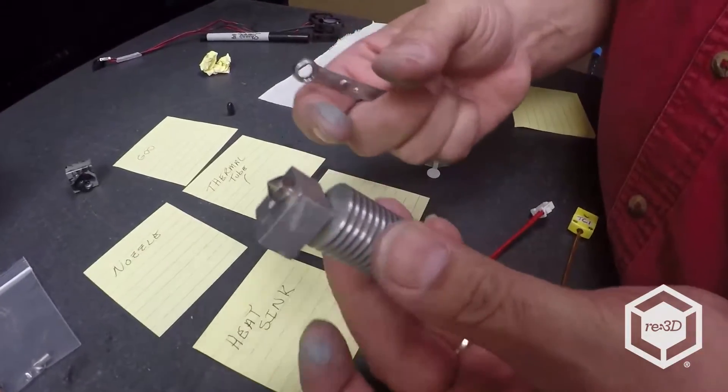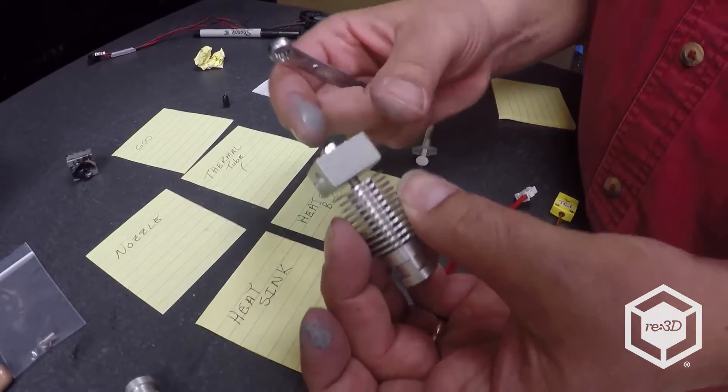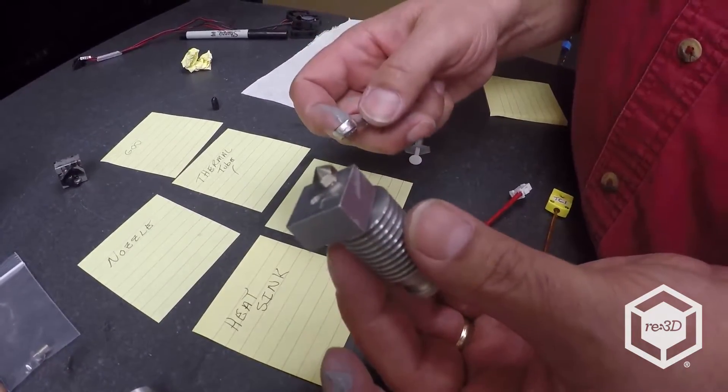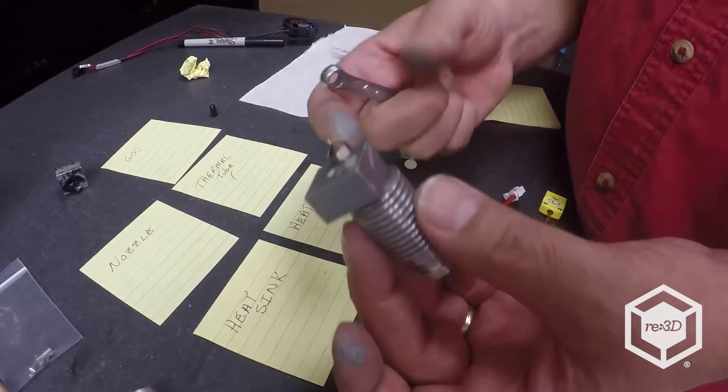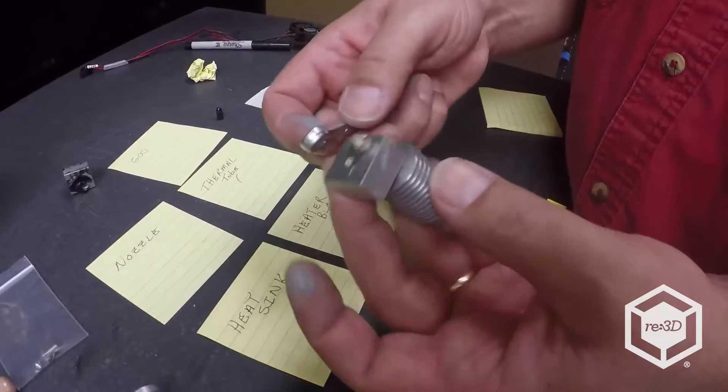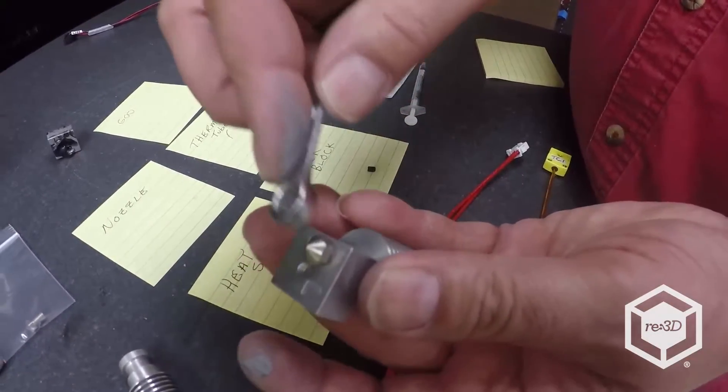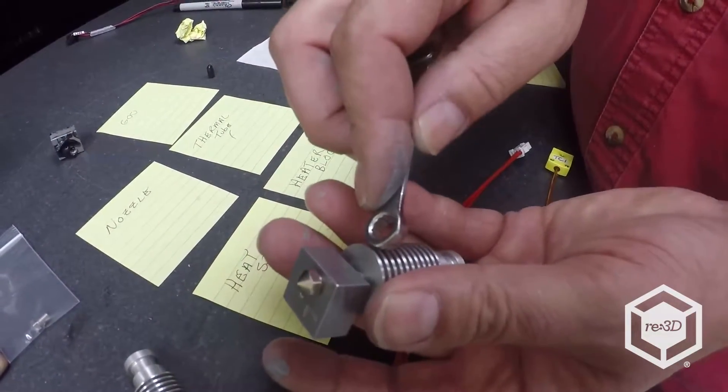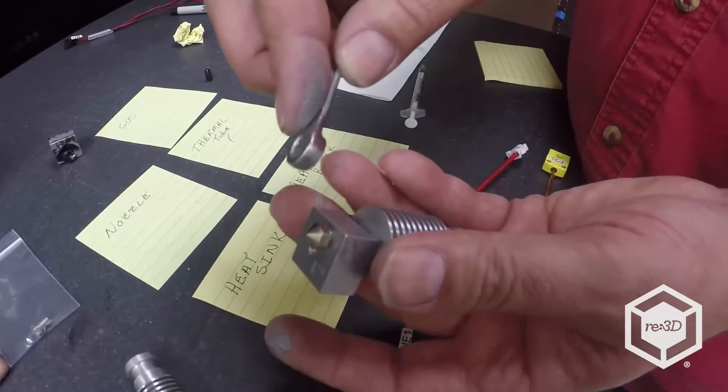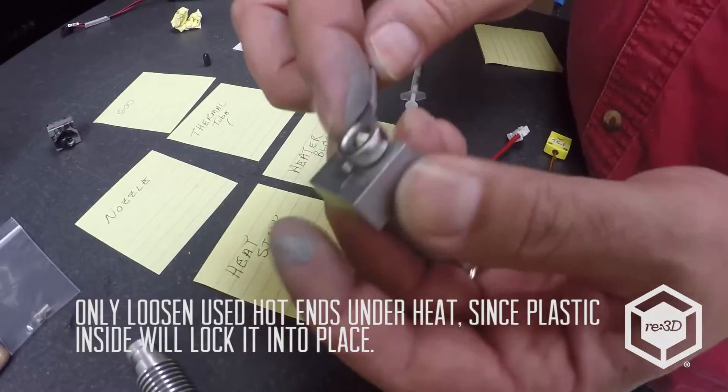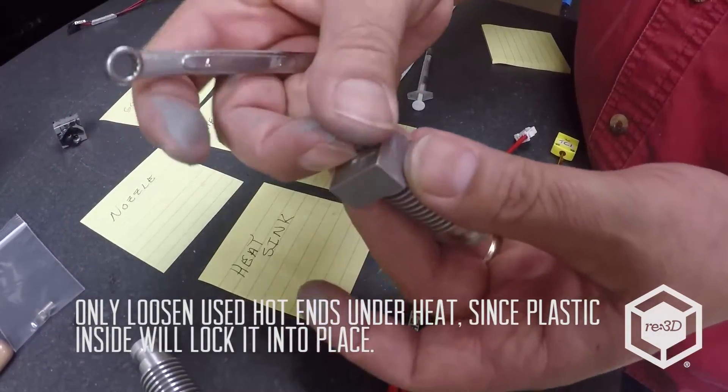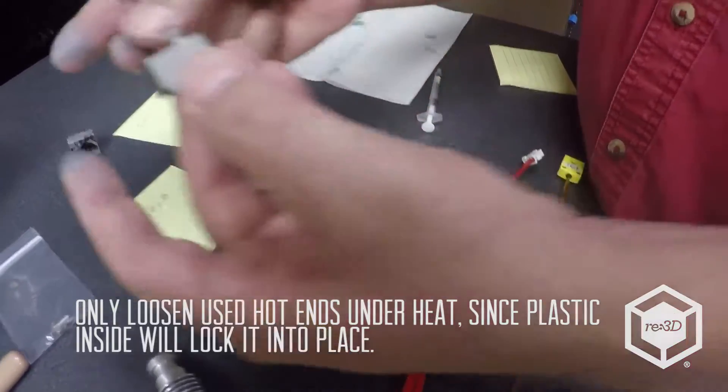So you have your hot end and let's say it's time you want to swap out a nozzle or you've got this thing completely caked with goo and you need to clean it up. This assembly is of course very simple. The nozzle and the thermal tube are kind of friction locked together.